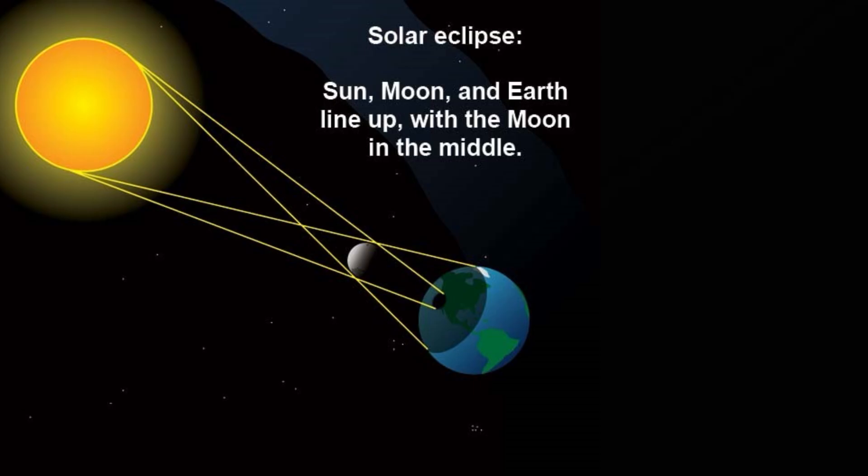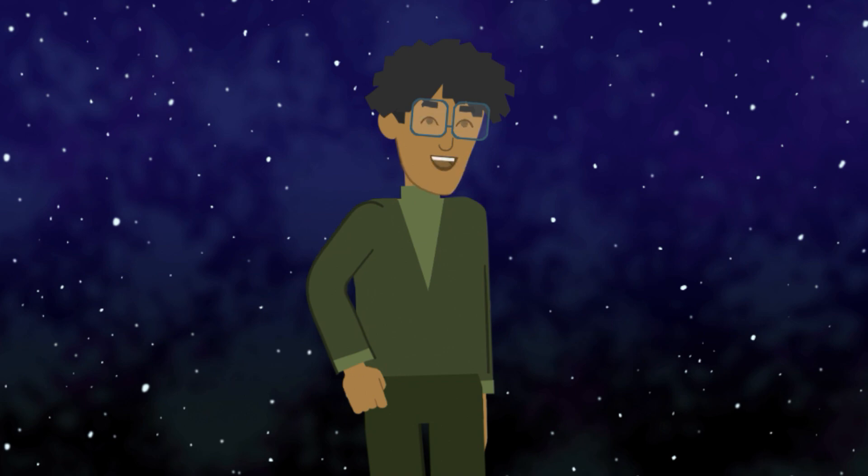Perfect alignment. For a total or annular eclipse, the alignment must be nearly perfect. If the alignment is slightly off, a partial eclipse occurs instead.